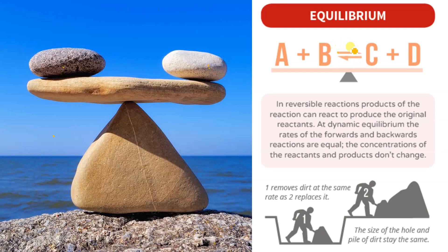In a reversible reaction, products can react to produce the original reactants. So A + B converts into C + D, and C + D can also convert back into A + B. This is also called dynamic equilibrium — the reaction goes in the forward direction as well as the backward direction. At dynamic equilibrium, the rate of the forward reaction equals the rate of the backward reaction. This is a very important point.